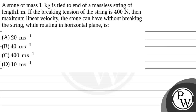Hello. Let's read the question. The question says that a stone of mass 1 kg is tied to the end of a massless string of length 1 meter. If the breaking tension of the string is 400 N, then find the maximum linear velocity the stone can have without breaking the string while rotating in a horizontal plane.